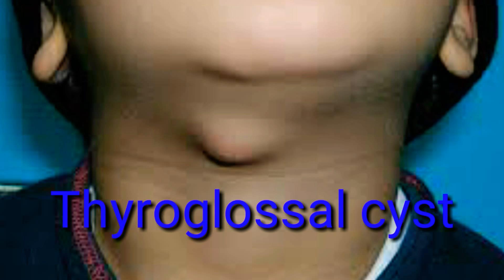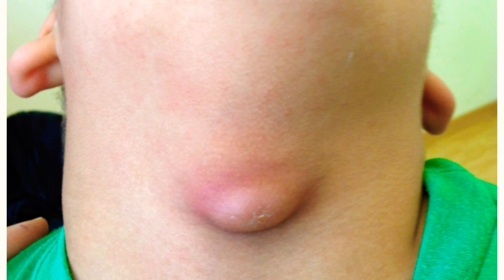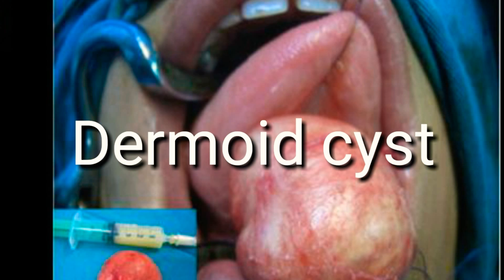Thyroglossal cyst: It arises from the thyroglossal duct. It may be asymptomatic or may cause symptoms as a result of pressure on other structures. Swallowing will cause the mass to move upward.